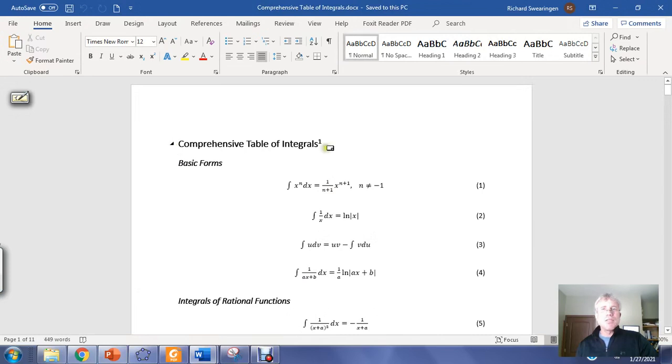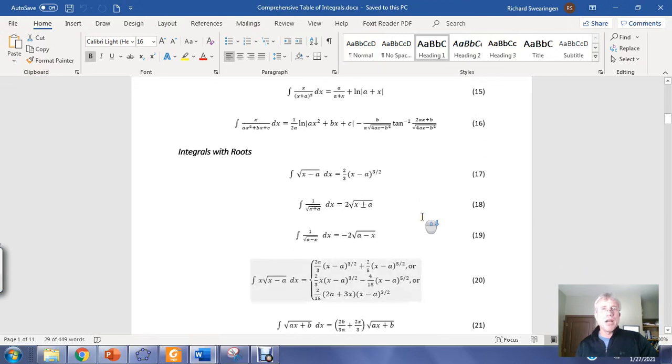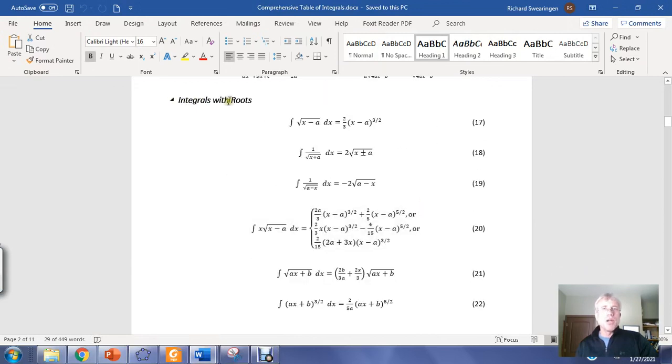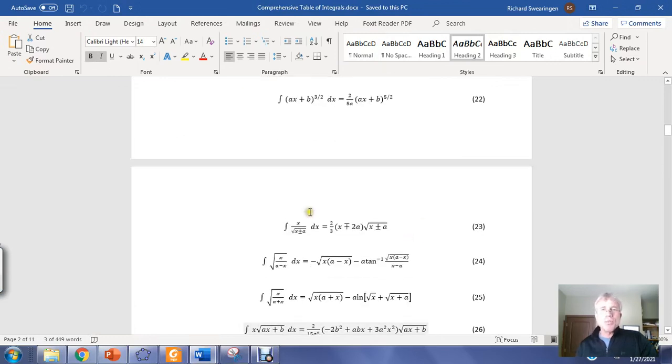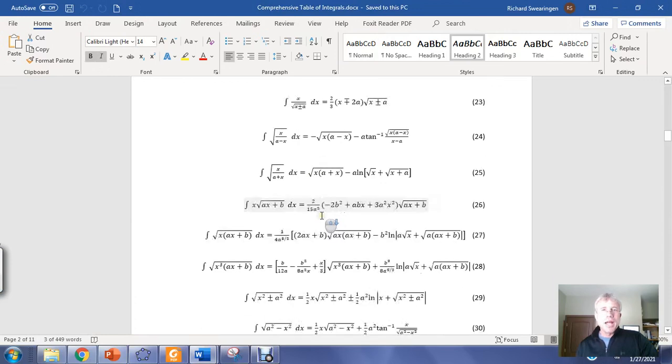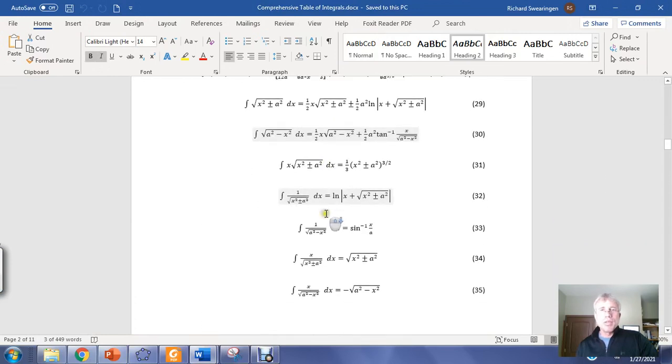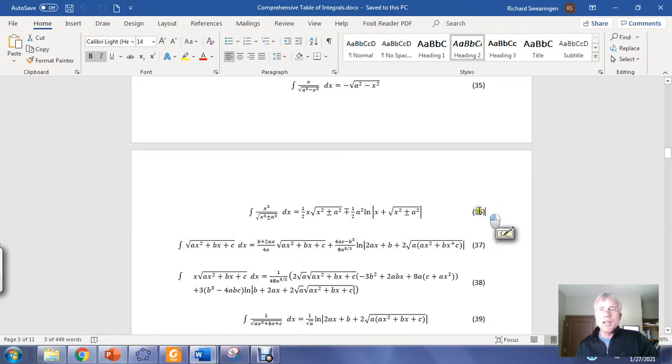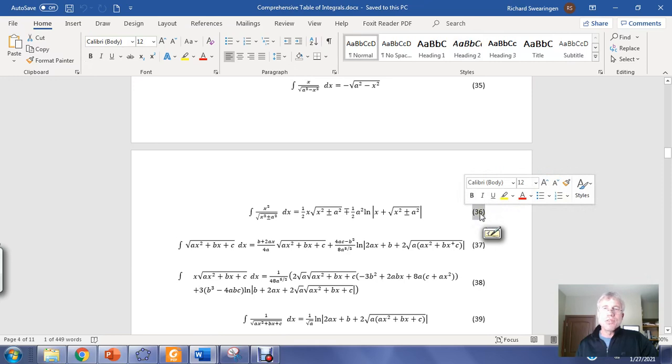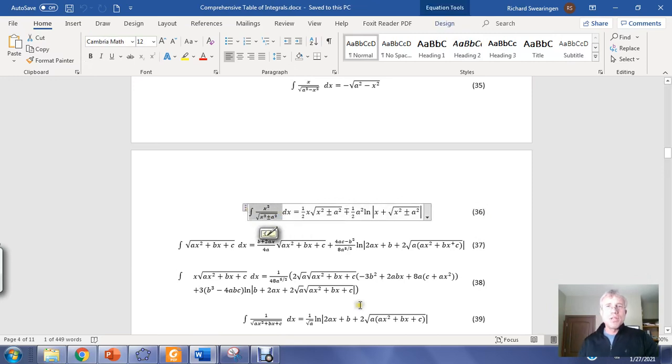So in the comprehensive table of integrals that you've been provided via PDF document, if you scroll down, there's going to be a section on integrals with roots, and we have 3x squared over the square root of x squared minus 5. You're walking through here trying to determine if you can see that pattern show up, and here it is, equation 36, the integral of x squared over the square root of x squared plus or minus a squared. This is going to fit the pattern.